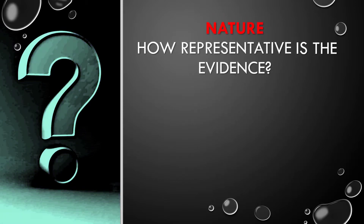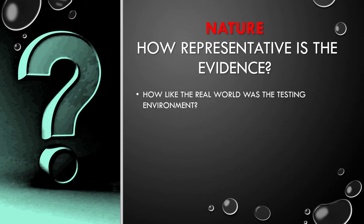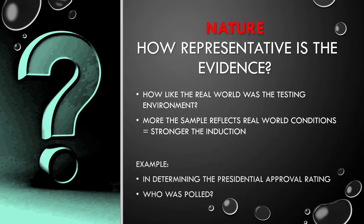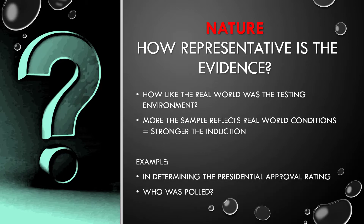When we talk about the nature of a situation, we're asking how representative is the evidence — in other words, how like the real world was the testing environment. The more the sampling reflects real-world conditions, the stronger the induction. For example, with the presidential approval rating, were the 20,000 people polled all Republicans? That would skew the results. If the U.S. population is 60% urban and 40% rural, did the poll reflect that distribution?